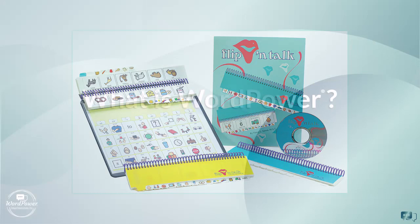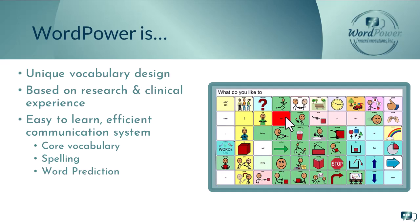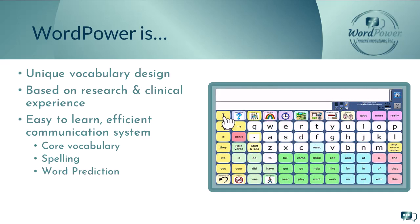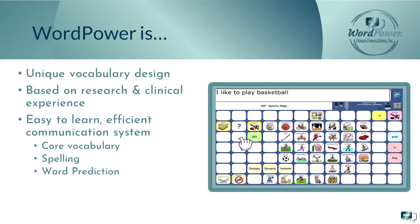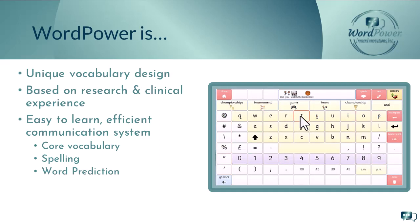Let's begin with a description of Word Power. Word Power is a unique vocabulary design based on research and clinical application for AAC devices and apps. Word Power combines the features of core vocabulary, spelling, and word prediction to create an easy-to-learn and efficient communication system. The system takes advantage of the fact that while we may have a normal speaking vocabulary of between 10,000 and 30,000 words.